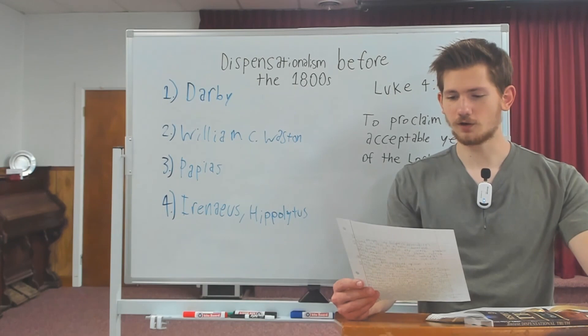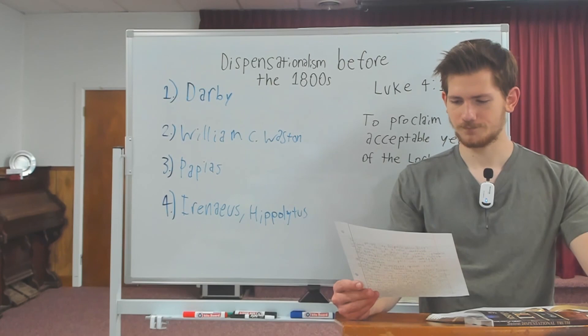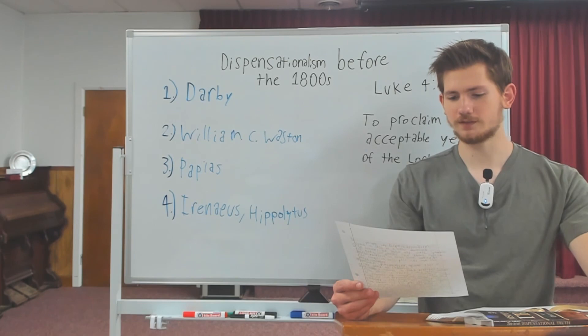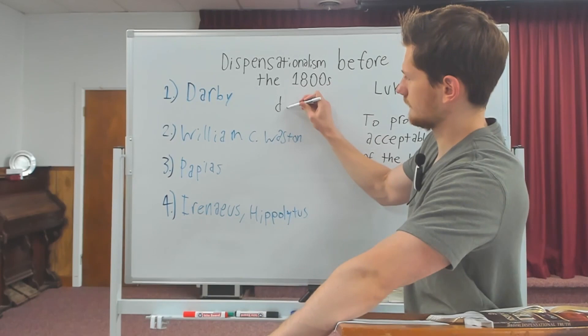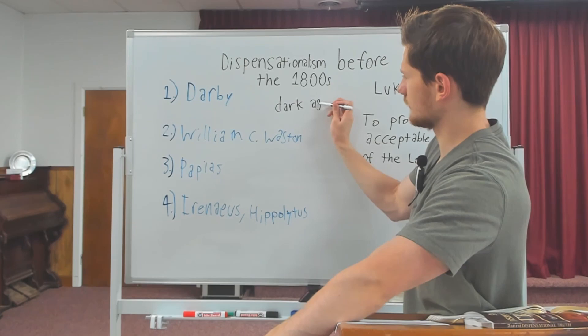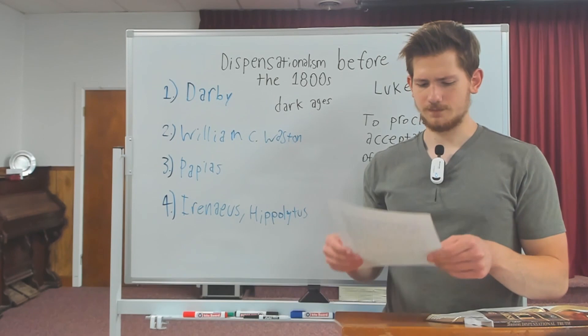The church of the Dark Ages did not see fit to preserve the writings of Papias and Irenaeus — we only have 10 fragments from his books before the Dark Ages. It seems like this information was being suppressed. In the Dark Ages, people did not appear to want dispensational teaching, which is kind of strange.